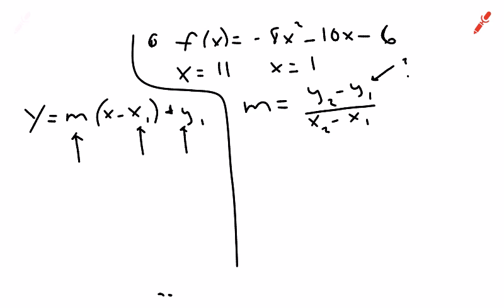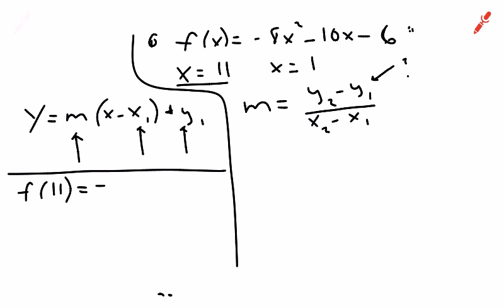The problem is we don't know the y values — all we have are the two x values. So before we can use the slope equation, we need to figure out the y values. I'm going to find f of 11 by plugging into the equation negative 8x squared minus 10x minus 6. In the calculator: negative 8 times 11 squared minus 10 times 11 minus 6, which gives us negative 1084.